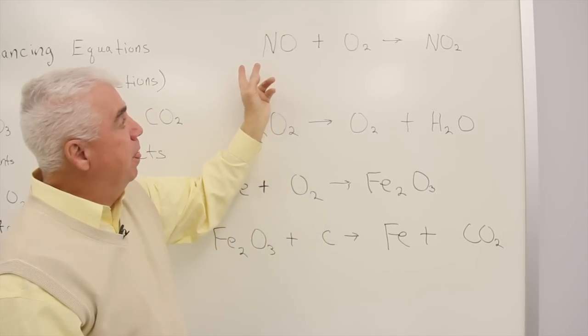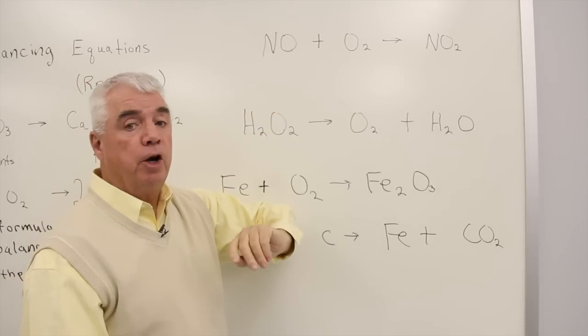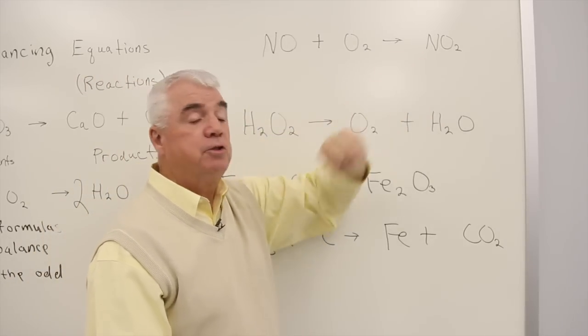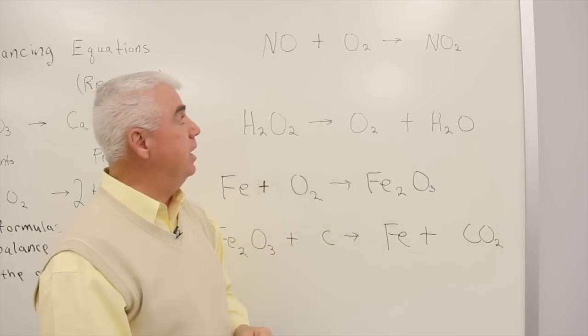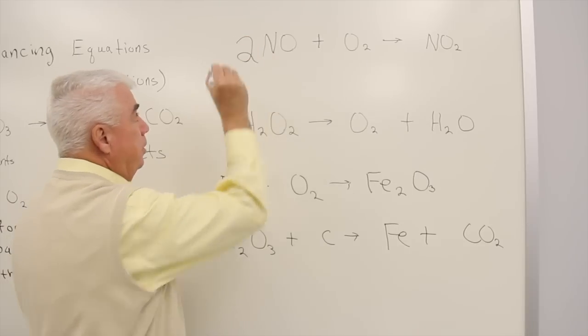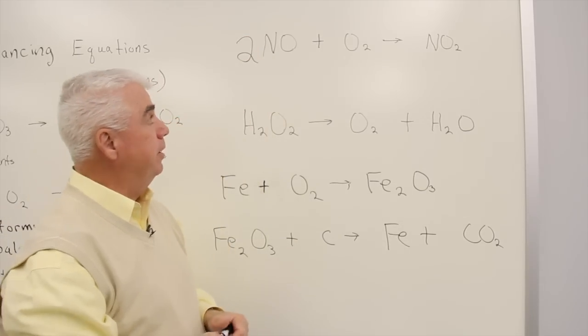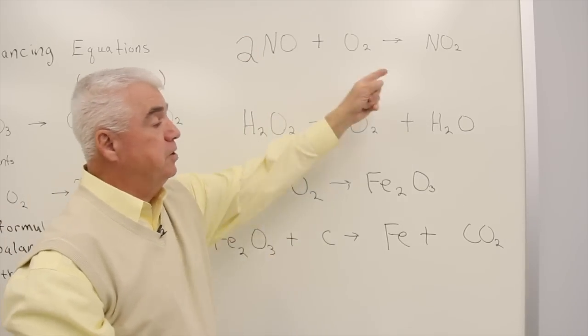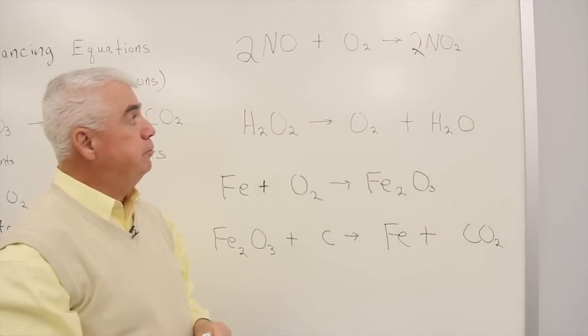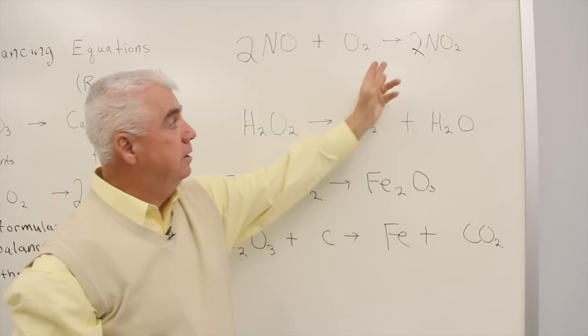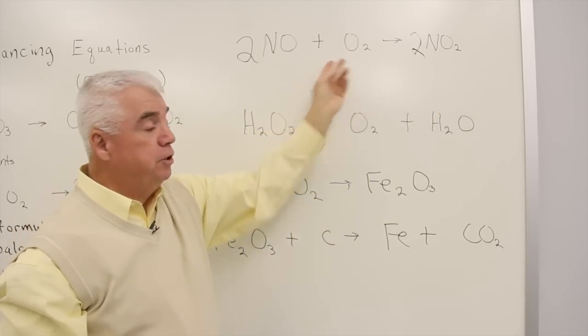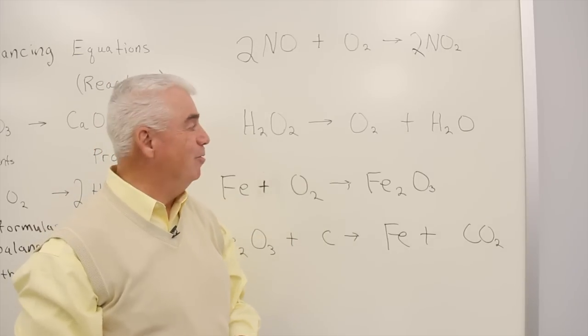Up here, I see that the oxygens are not in balance. 1 plus 2, I've got 3 on this side, 2 on that side. Let's try evening up the odd. I can do that by using a coefficient 2 in front of the NO, that means that we'll need 2 over on the right-hand side. We've got 2 nitrogens on each side, a total of 4 oxygens. 2 plus 2, 4 oxygens. We're all set.